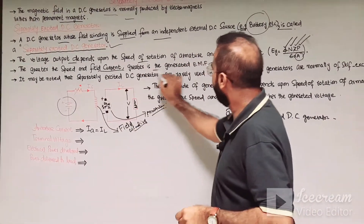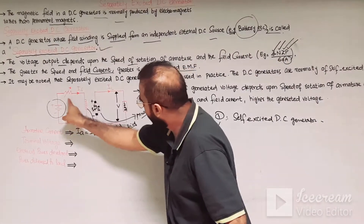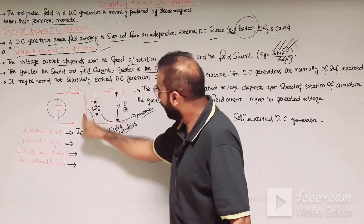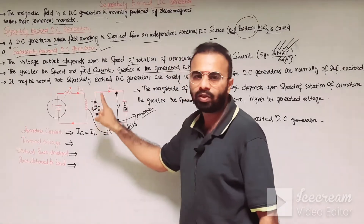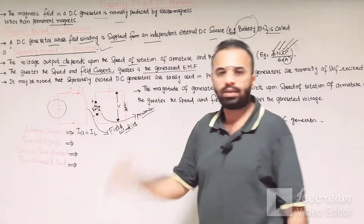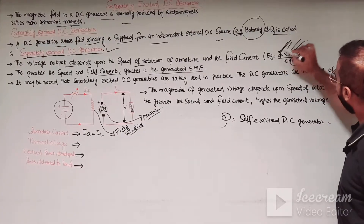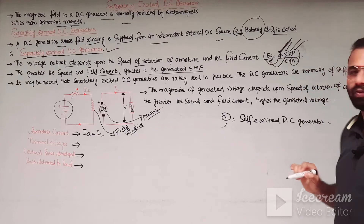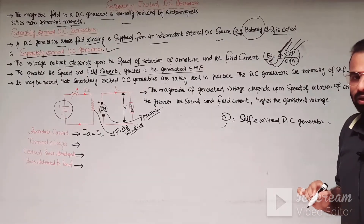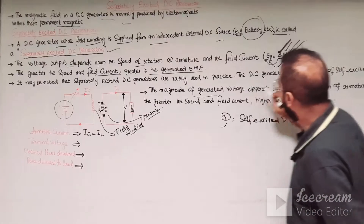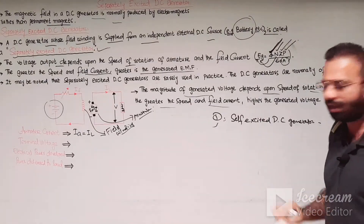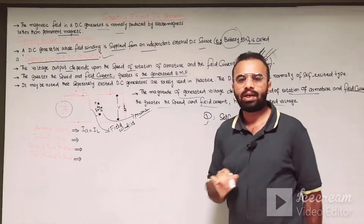The greater the speed and the field current, the greater the generated EMF. If we increase the field current in the field winding of the separately excited DC generator, more voltage is induced in the armature winding according to this expression. If we increase the magnetic flux or the field, the generated EMF will be more; or if we increase the RPM, again the generated EMF will increase. The magnitude of the generated voltage depends upon the speed of rotation of the armature and the field — hence the greater the speed and the greater the field current, the higher will be the generated voltage.